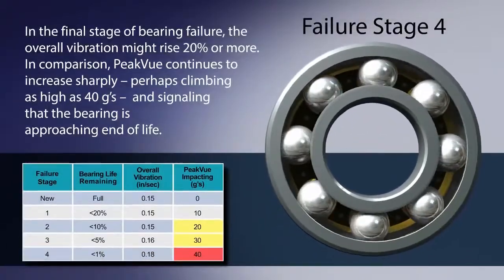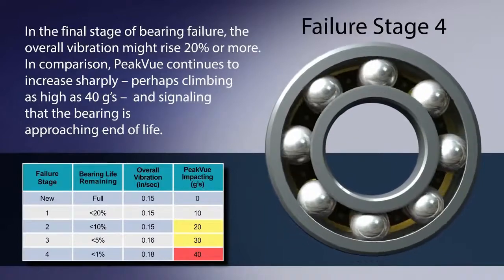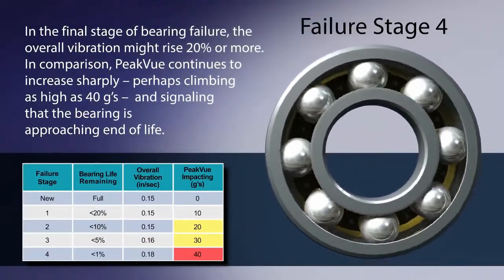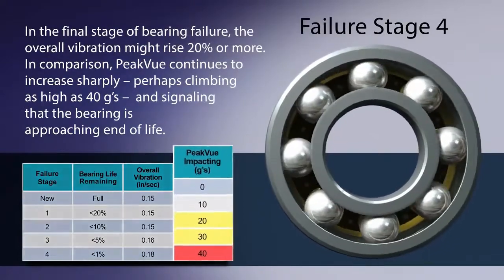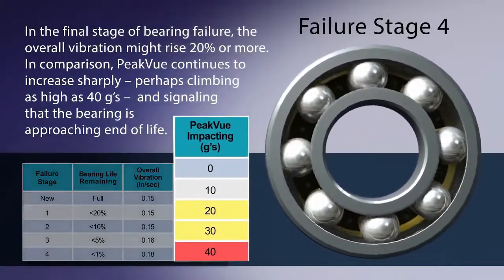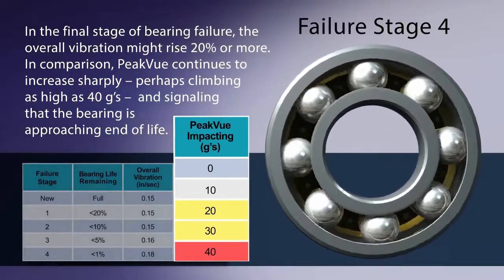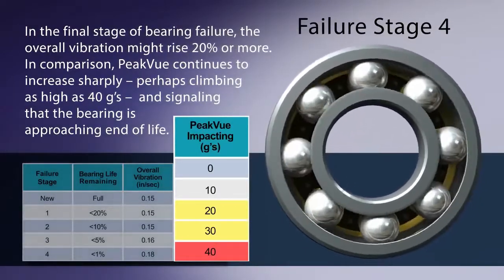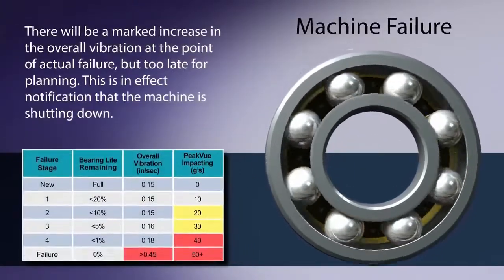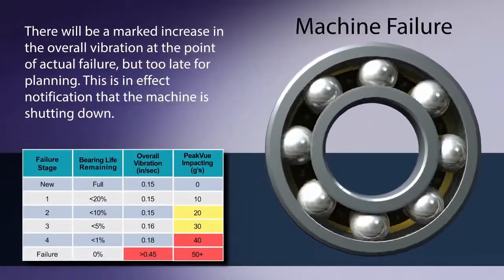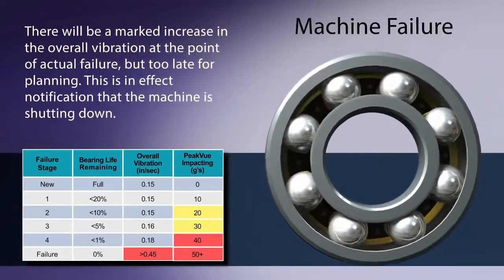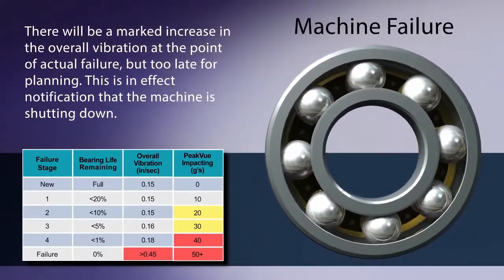In the final stage of bearing failure, the overall vibration might rise 20% or more. In comparison, peak view continues to increase sharply, perhaps climbing as high as 40 G's, signaling that the bearing is approaching end of life. There will be a marked increase in the overall vibration at the point of actual failure, but too late for planning. This is an effect notification that the machine is shutting down.